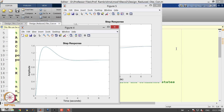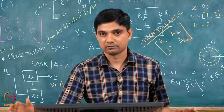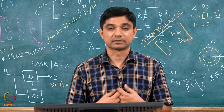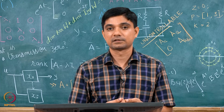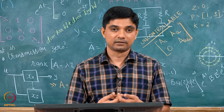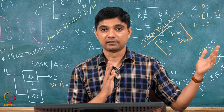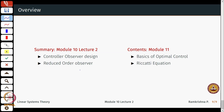This concludes the lecture on simultaneous controller-observer design and the reduced order observer. What is important is to decide where to place the observer poles. The key takeaway is that the observer dynamics must be faster — the error must converge to zero faster than the controller dynamics. So the observer poles should be placed further to the left than the desired poles of the closed loop plant. In module 11, we will start with some basics of optimal control and end up with the famous Riccati equation. Thanks for listening.